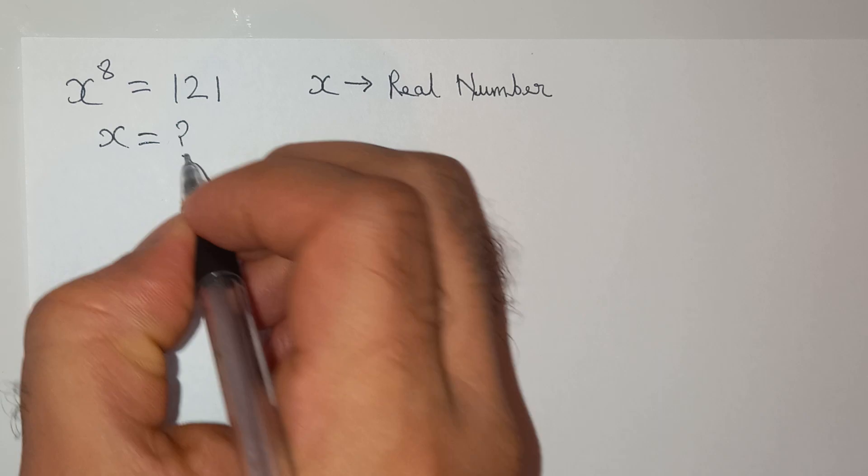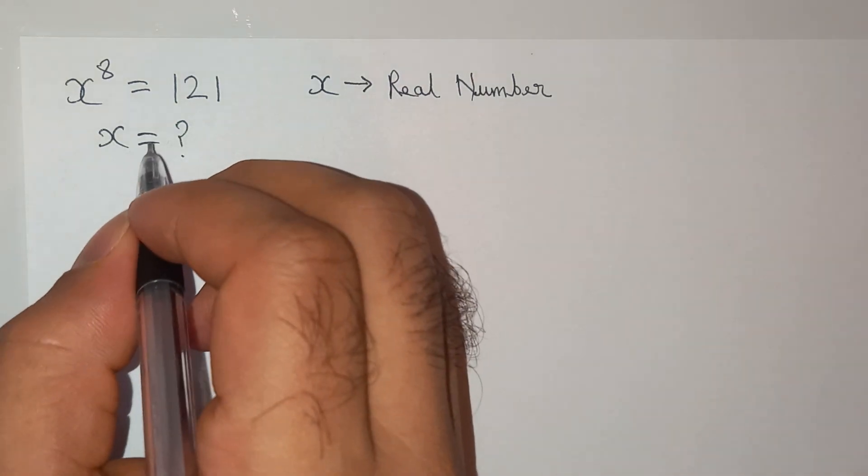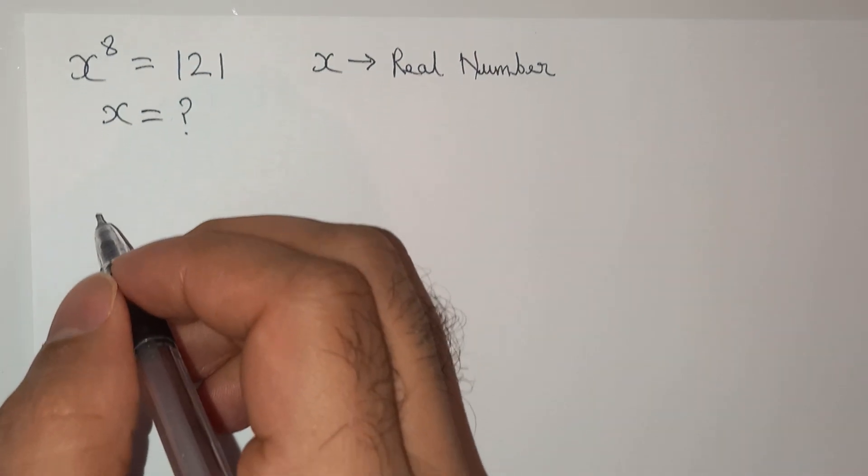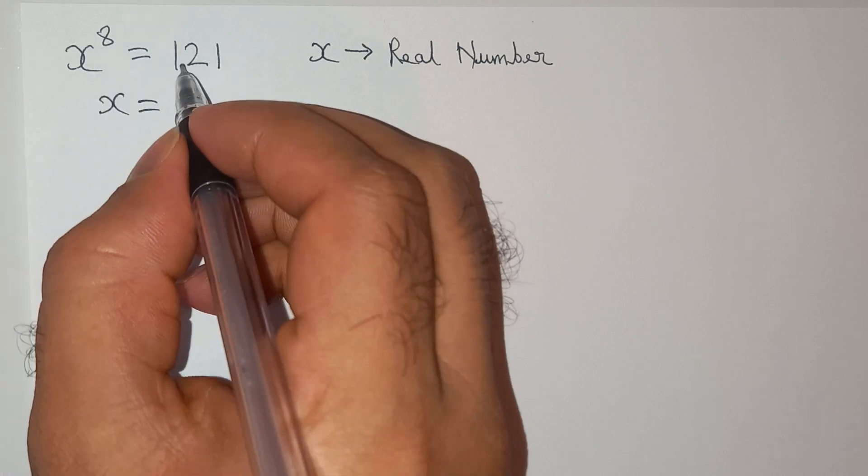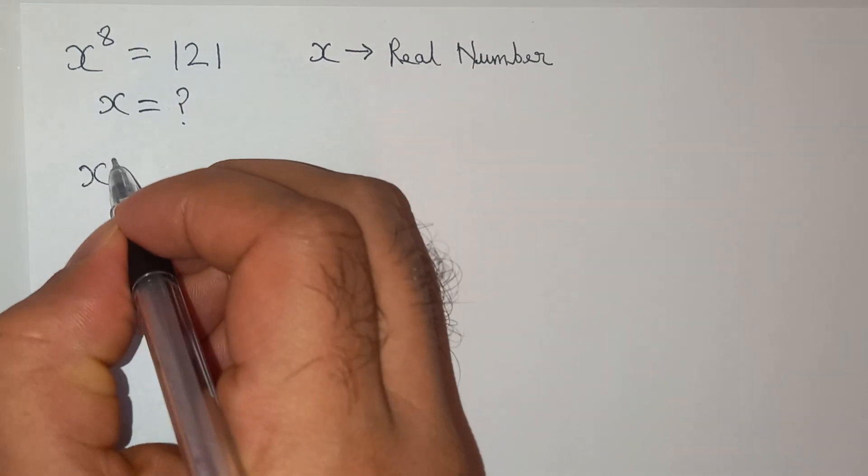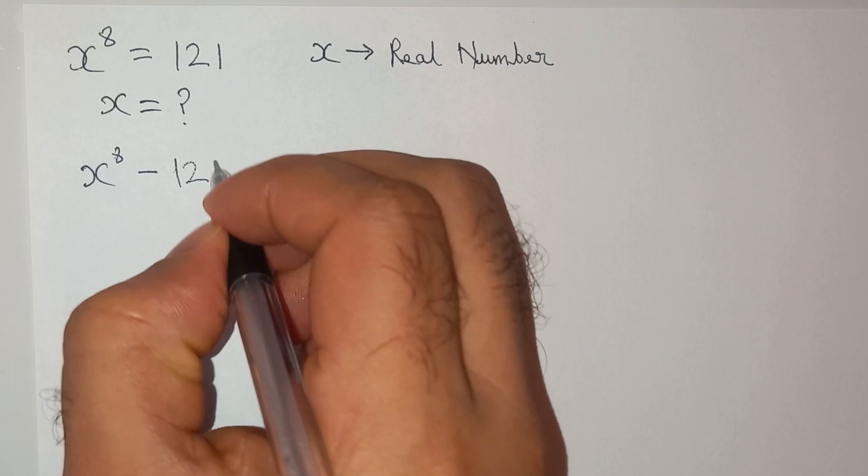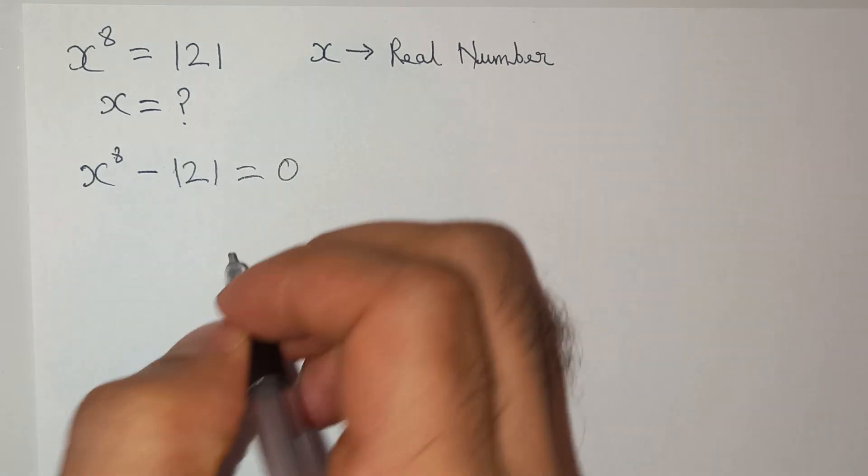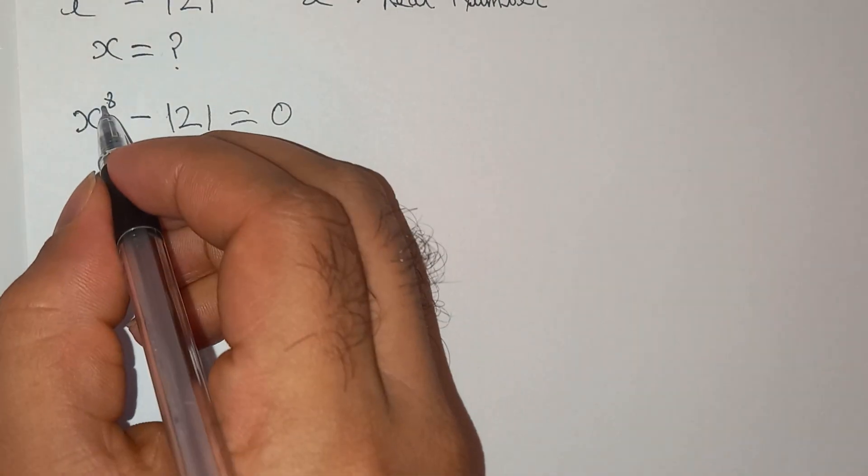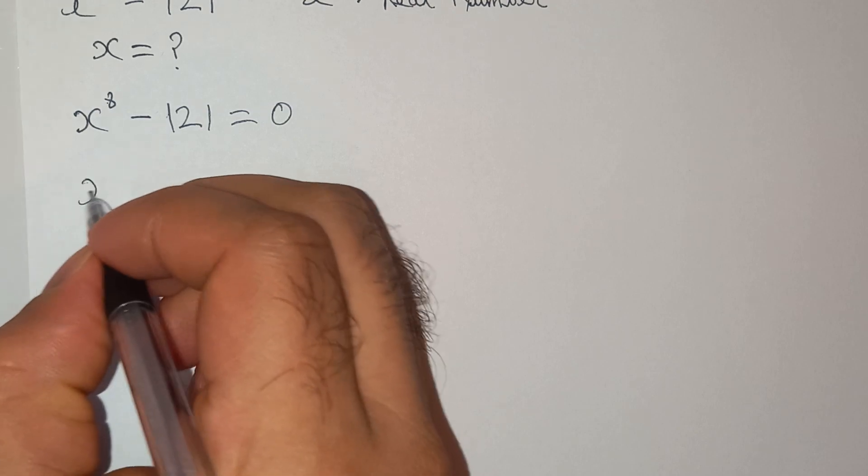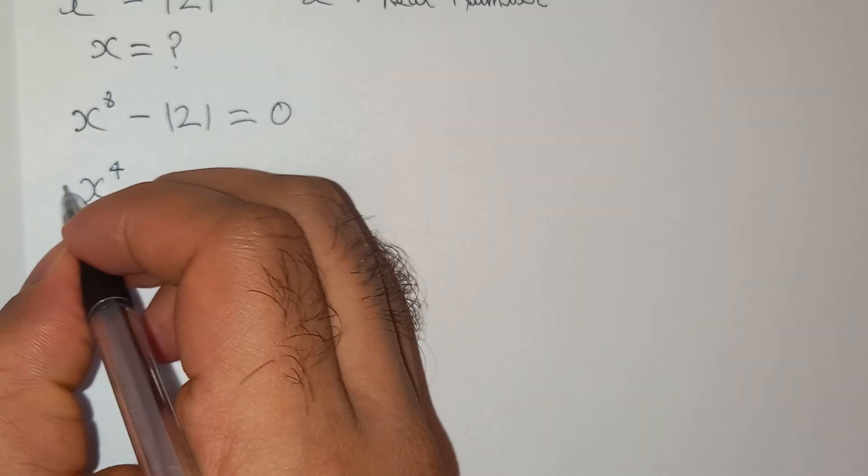So how are we going to solve this question? We can write this as x power 8 minus 121 equals to 0. Now this x power 8 can be written as x power 4 square.